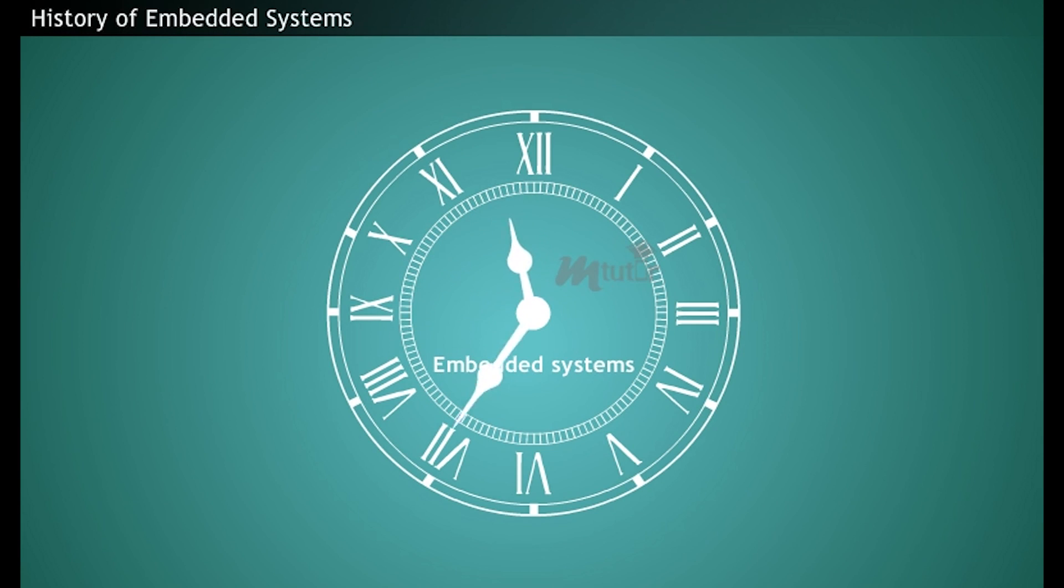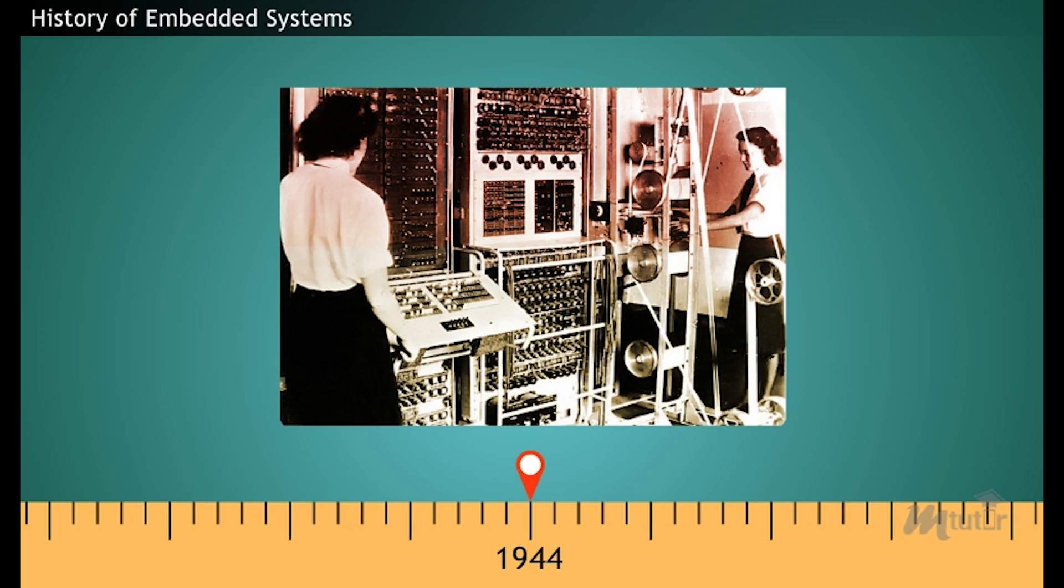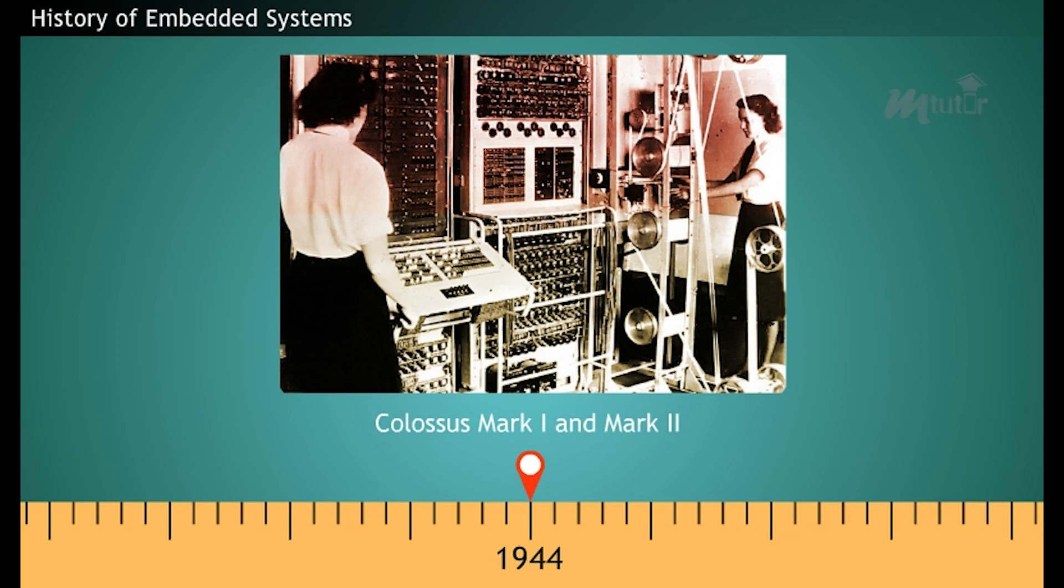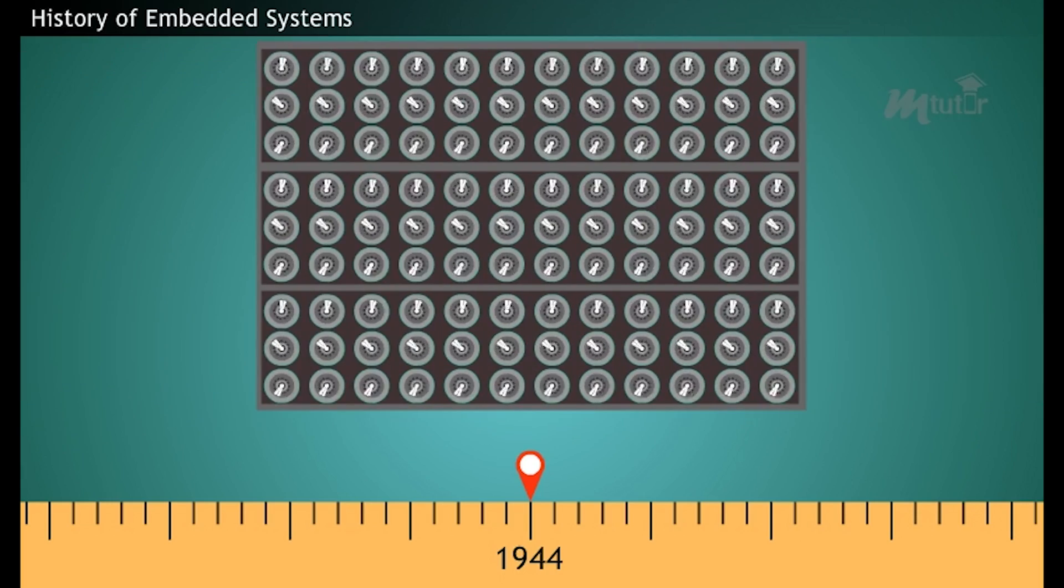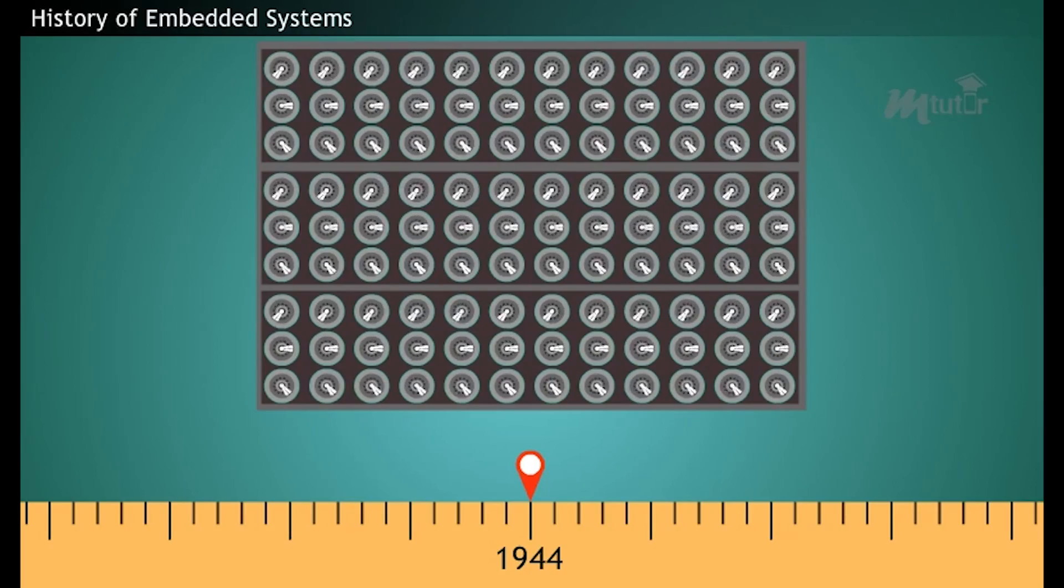So, let us take a look back at the major events that have marked the history of embedded systems. In 1944, the world's first programmable electronic digital computer was developed for the battle purpose. It was named as the Colossus Mark I and Mark II computers.